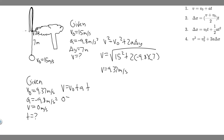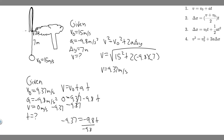Plugging in: 0 equals 9.37 plus minus 9.8 times t. Subtracting 9.37 from both sides gives minus 9.37 equals minus 9.8t. Dividing by minus 9.8, the negatives cancel, and we get t equals 9.37 divided by 9.8, which is 0.956 seconds. Keep in mind this is the time from the branch to the peak — since the trip up equals the trip down, we multiply by 2.